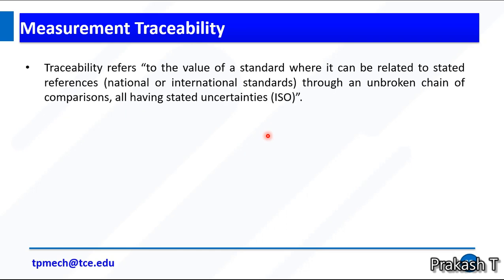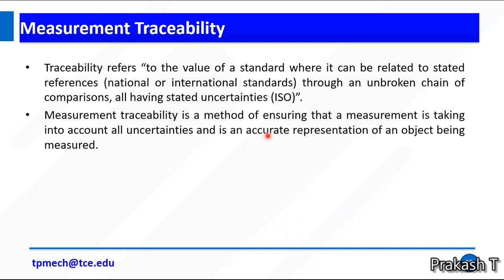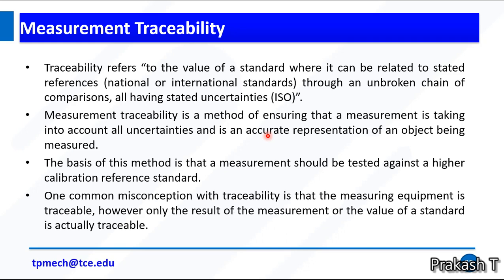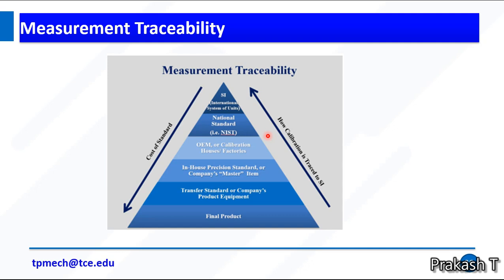Traceability refers to the value of a standard where it can be related to a stated reference through an unbroken chain of comparisons, all having stated uncertainties. Measurement traceability is a method of ensuring that a measurement is taking into account all uncertainties and is an accurate representation of the object being measured. The basics of this method is that a measurement should be tested against a higher calibration reference standard. One common misconception with traceability is that the measuring equipment is traceable. However, only the results of the measurements or the value of standards is accurately traceable. This diagram shows the measurement traceability: primary standard, secondary standard, and then some of the working standards, OEM or Overall Equipment Manufacturers.